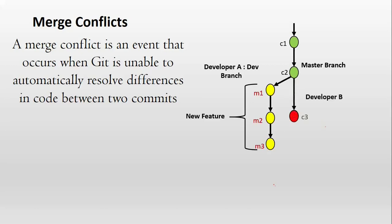But developer A has not yet merged his changes with the master branch. So when developer A checked the status of the master branch, he saw there is a new commit called C3. But when he tried to merge his development branch changes with the master, it leads to merge conflicts.